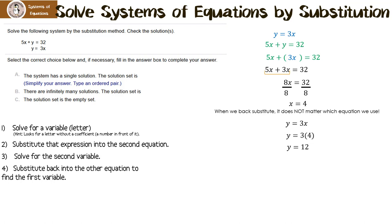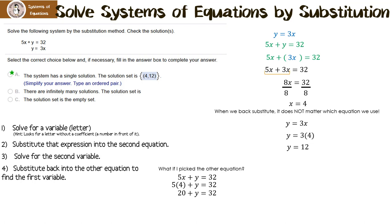The system has a single solution — the ordered pair (4, 12). Remember an ordered pair is always x, y. Now, what if we use the other equation? We have 5x plus y equals 32, x is 4, so 5 times 4 is 20. I subtract 20 from both sides and get y equals 12. That means it doesn't matter which equation you use to find the second variable.